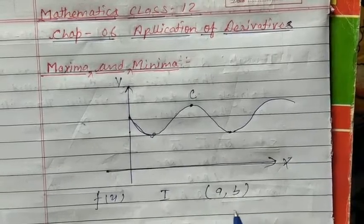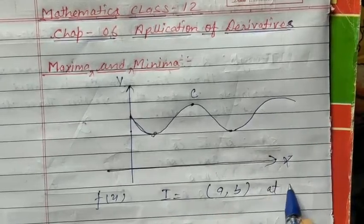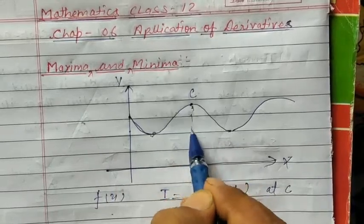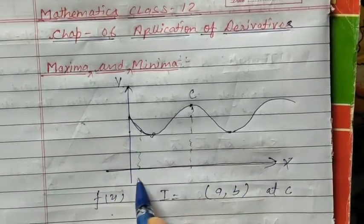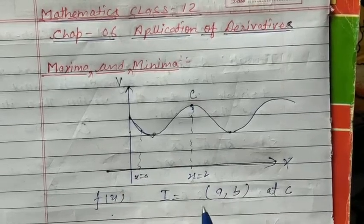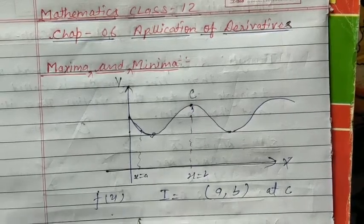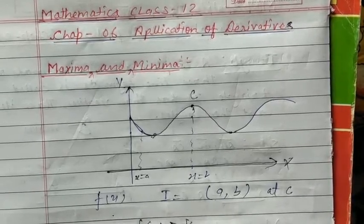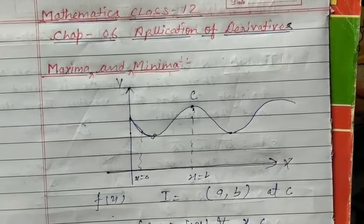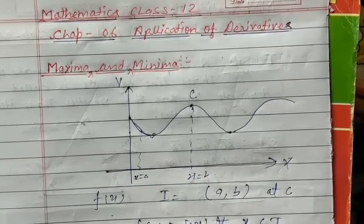Consider an open interval (a, b). Any x in this interval belongs to the interval I. At a point c in this interval, the function has a maximum value such that f(c) is greater than f(x) for every x belonging to I. This means f(c) > f(x) for all x in the interval I.